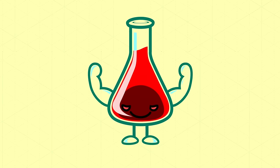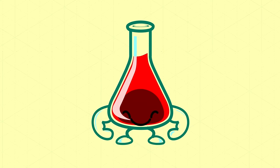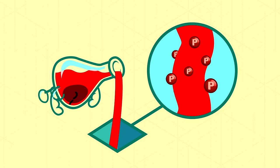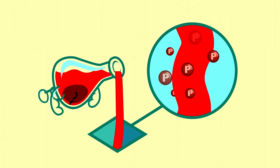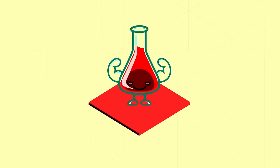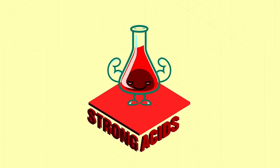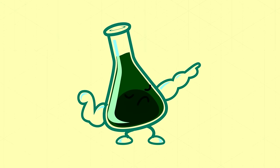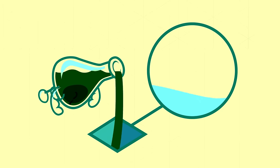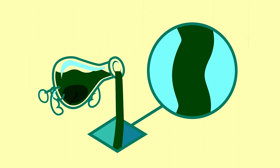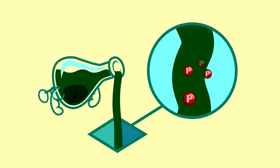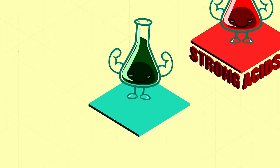Some substances are so aggressive about donating their protons that when they get a chance, all of the molecules in a sample will dump a proton — sometimes more than one — to the surrounding water molecules. We call these strong acids. Meanwhile, some compounds are so ready to accept a proton that they won't wait around — they'll just rip one off water, which usually has two protons but is generous enough to hang out with just one. We call these strong bases.